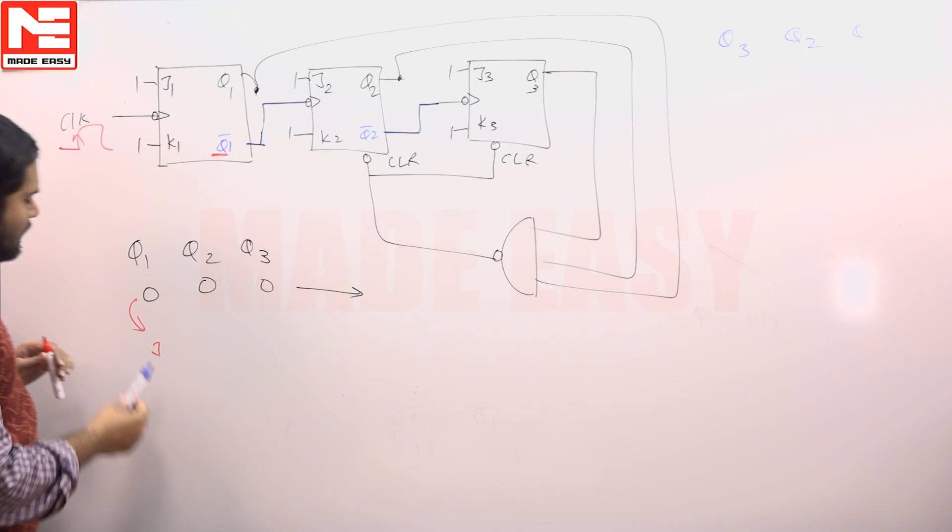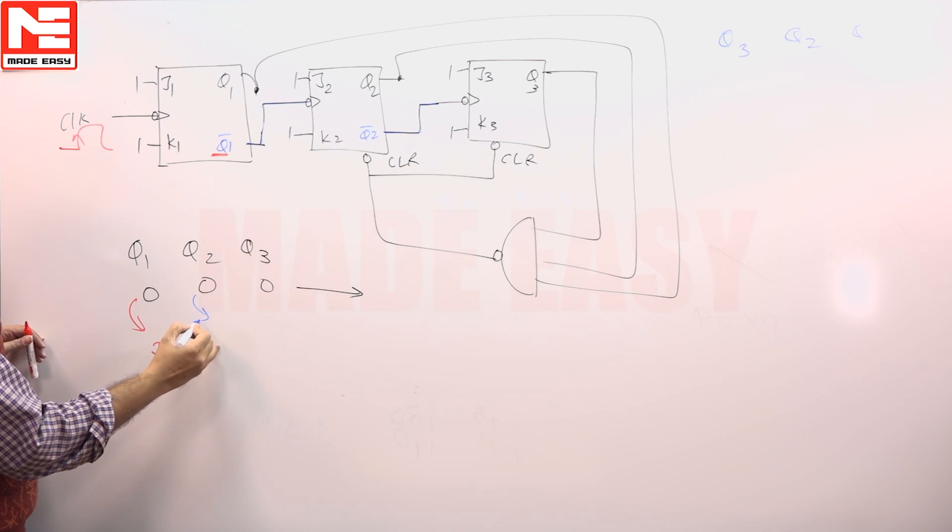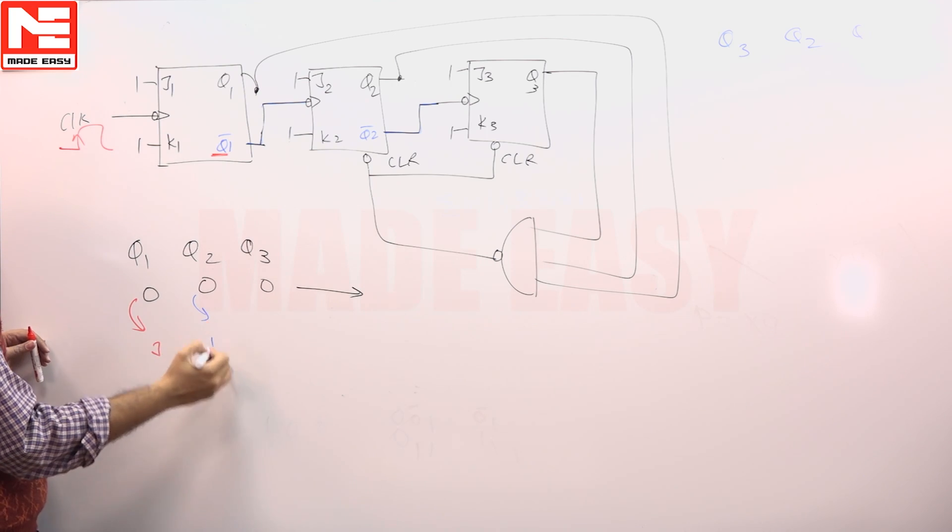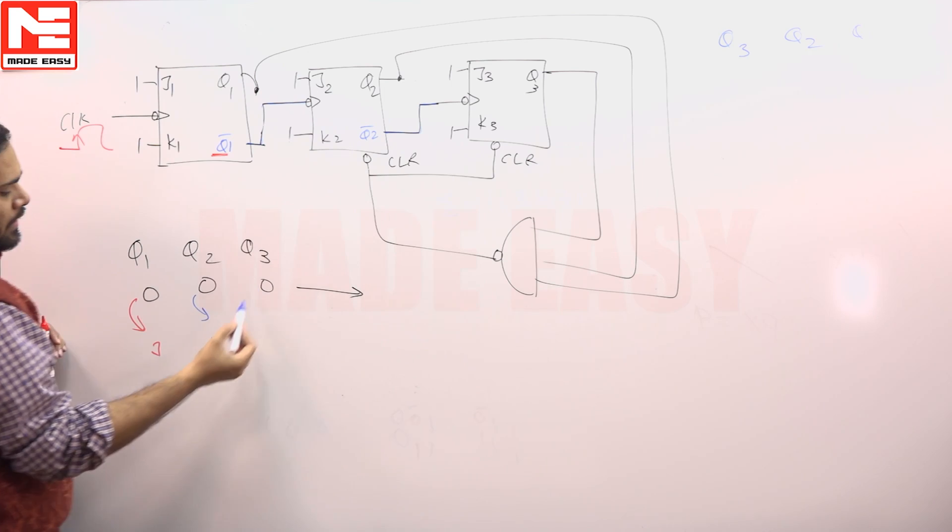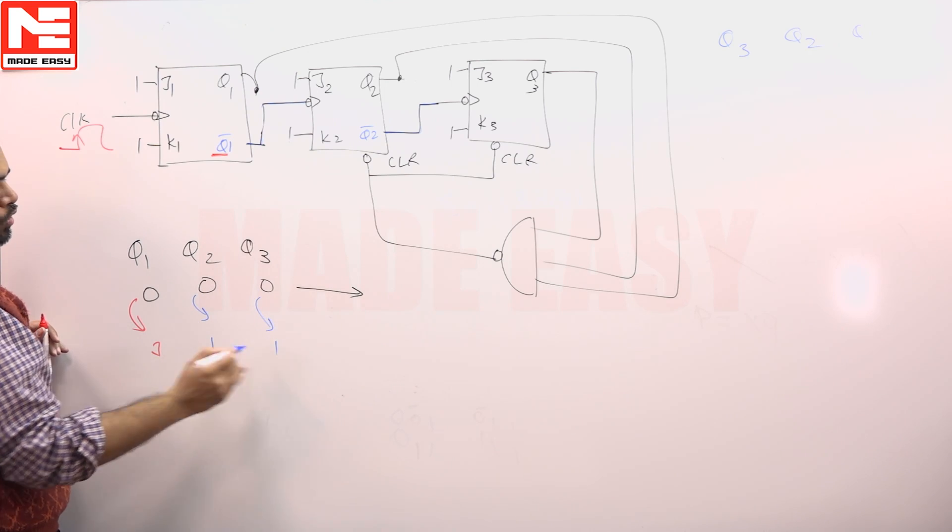So what is going to happen? While this is toggling, this will toggle from 1, and while this is toggling, again see Q2 bar is connected, so once this is toggling, this also will toggle to 1.